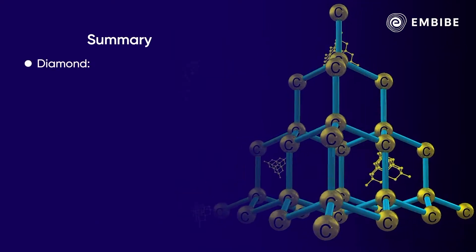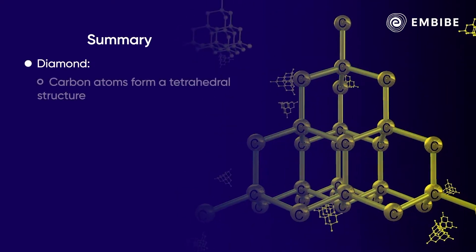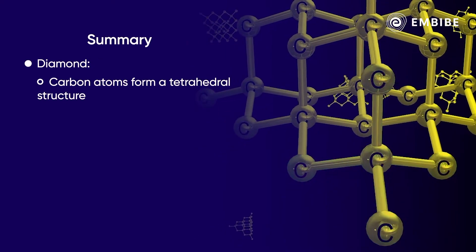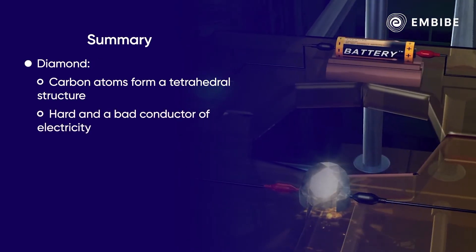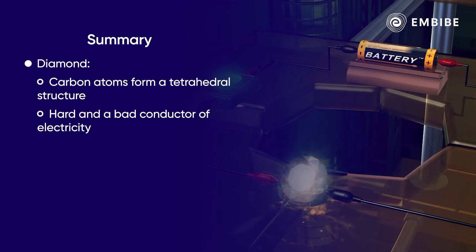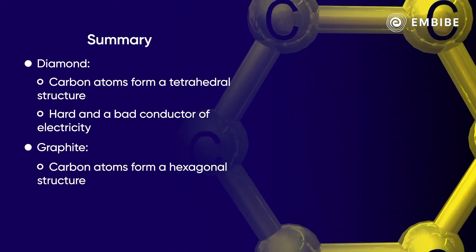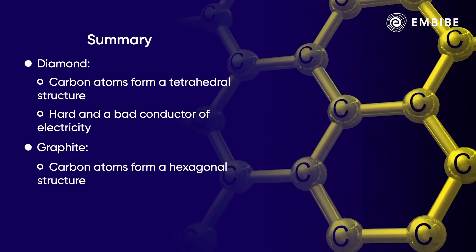To summarize, we have studied that in diamond, carbon atoms are bonded together to form a tetrahedral structure which makes it hard and a bad conductor of electricity. While in graphite, carbon atoms are bonded to form a hexagonal structure which